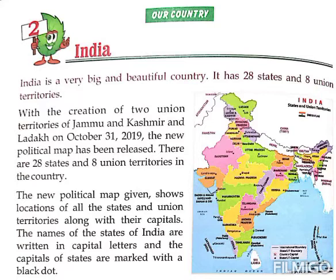India is a very big and beautiful country. It has 28 states and 8 union territories. With the creation of two union territories, Jammu and Kashmir and Ladakh, on October 31, 2019, the new political map has been released.